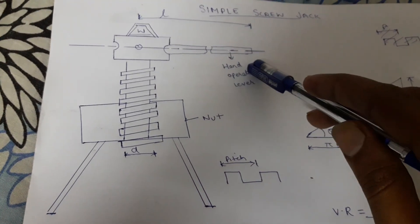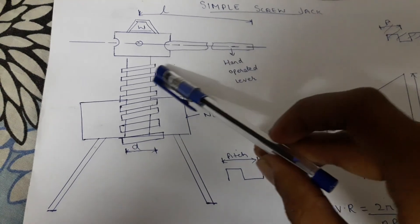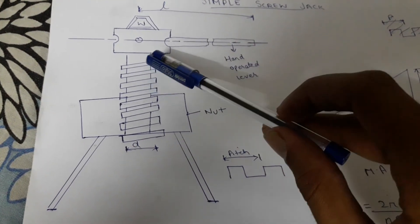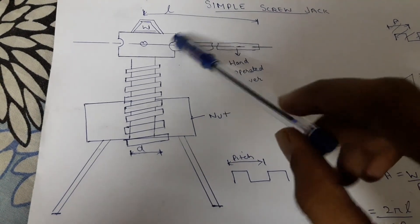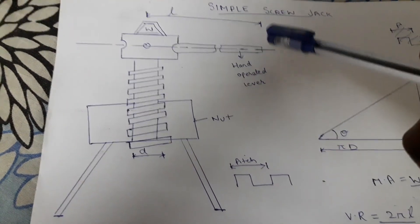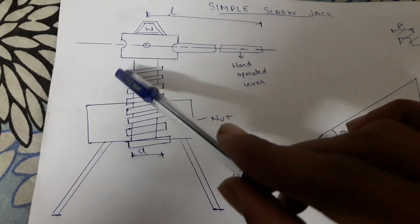Basically it consists of a hand operated lever which is inserted into the head of square threaded screw and the square threaded screw is inserted into a nut which is fixed on a frame. So the load is being held here and the effort is applied to the hand operated lever.